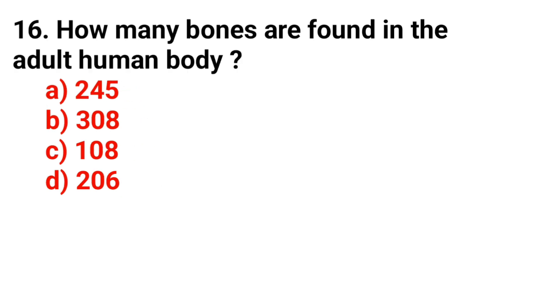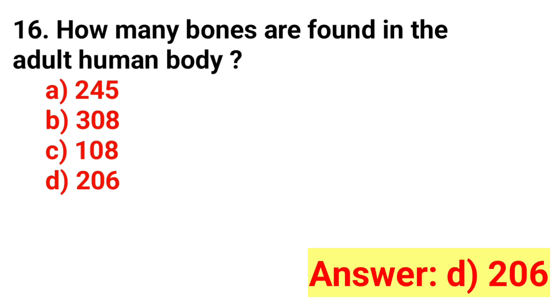Question number 16. How many bones are found in the adult human body? The answer is Option D: 206.